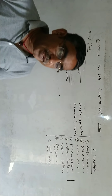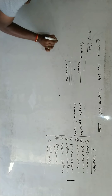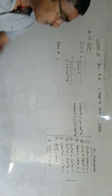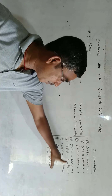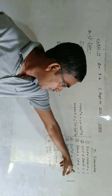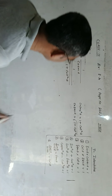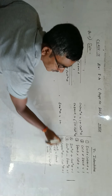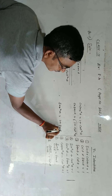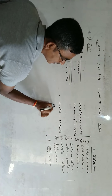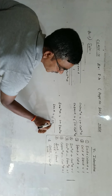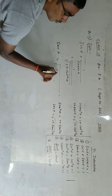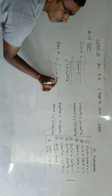Next, we have to convert sec a in terms of cot a. For secant, we can first convert to tan, and tan we can convert to cot. The formula is sec squared a equals 1 plus tan squared a, so sec a equals root over 1 plus tan squared a. In place of sec a, we can substitute root over 1 plus tan squared a. Now we need to convert tan squared a into cot a.